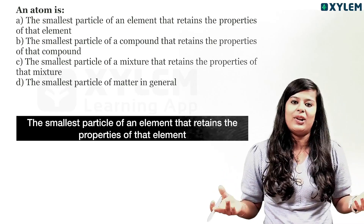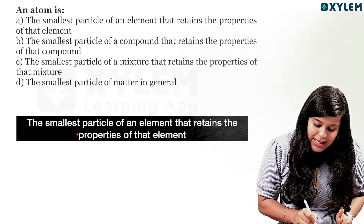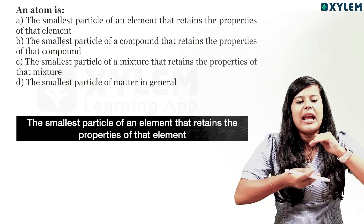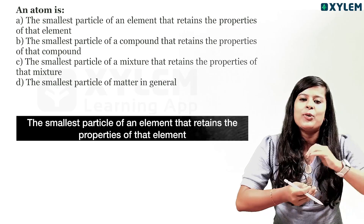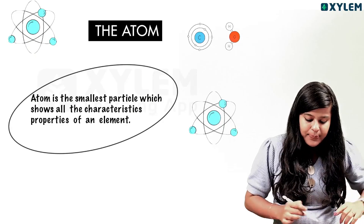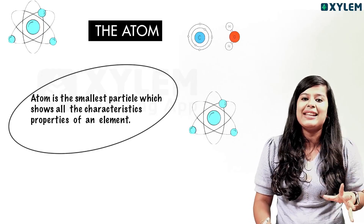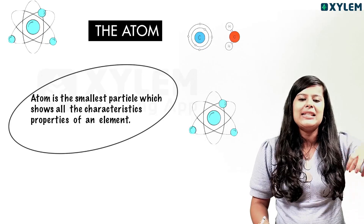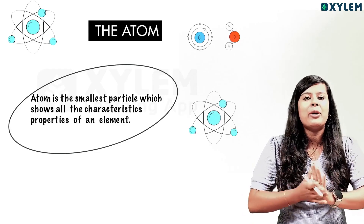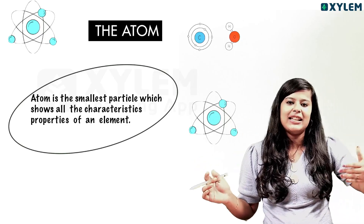The answer is: the smallest particle of an element that retains the properties of that element. For example, one carbon atom — that is the carbon element. How small is the particle? The particle is extremely small. We cannot see the particle with the naked eye.